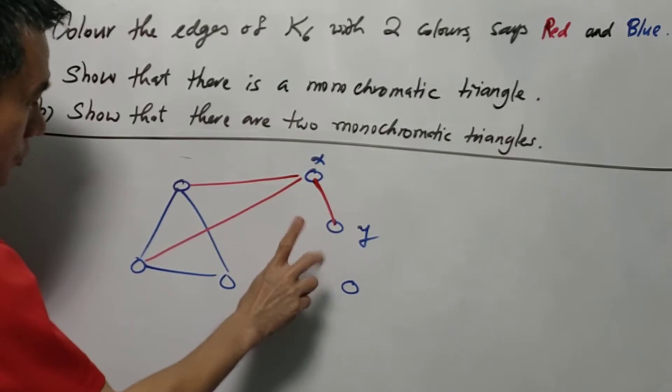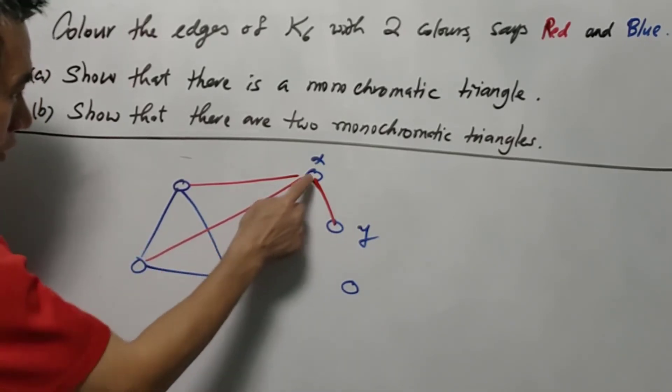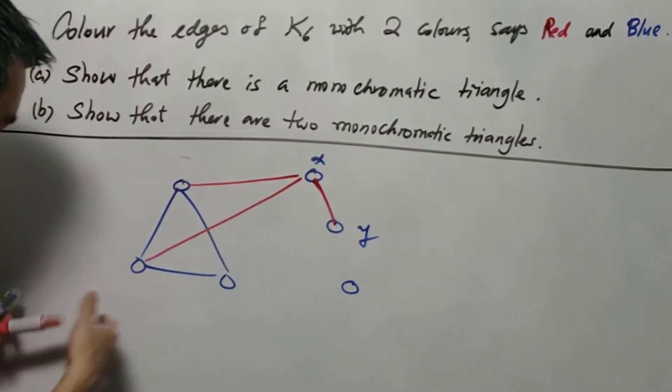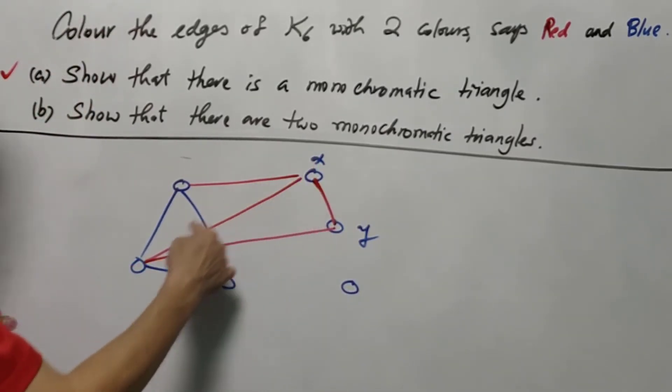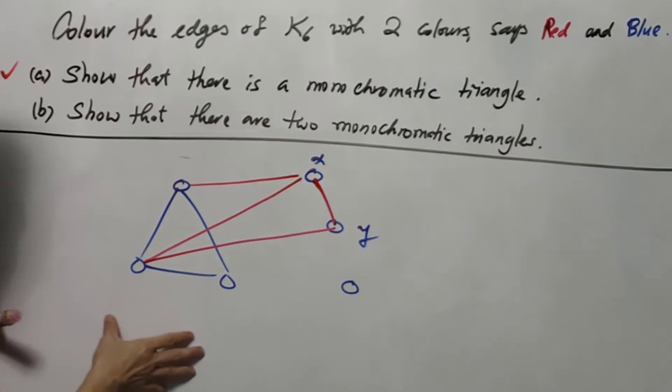Because there's only three vertices here, out of two red edges, there must be one vertex that is common to the neighbor of x. Let's say this one. In this case, we will see that there is a red triangle. And therefore, we show that there are two monochromatic triangles. And here we've shown statement B.